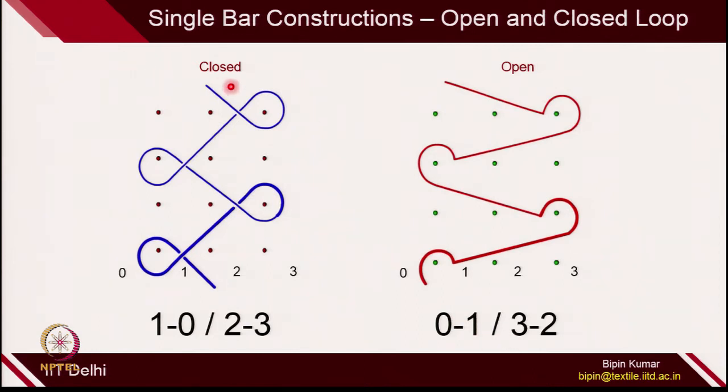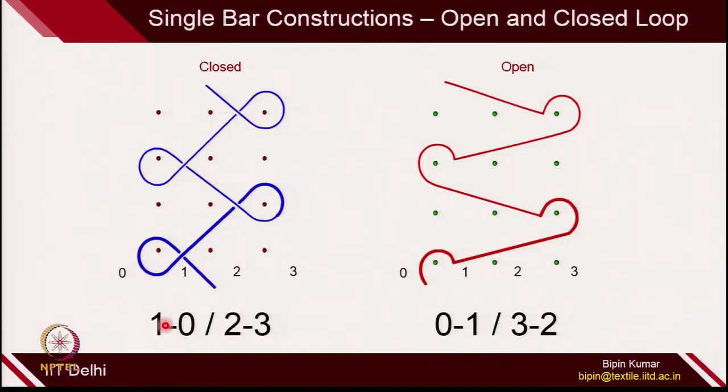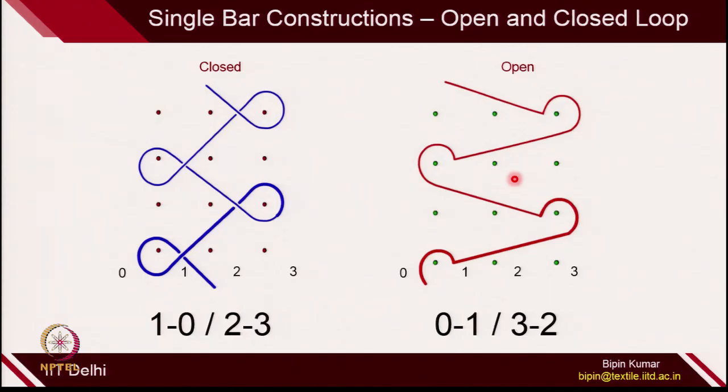In both constructions, the amount of overlap is the same — 1 pitch — and the underlap is the same — 2 pitch. The only difference is they are in opposite directions. Once you have different opposite directions, the nature of the loop in the fabric will be different. The open loop construction is highly unstable and distorted — the fabric is wider and the GSM is lower. There are a lot of properties that can be altered only by changing the direction of overlap and underlap in the same course.